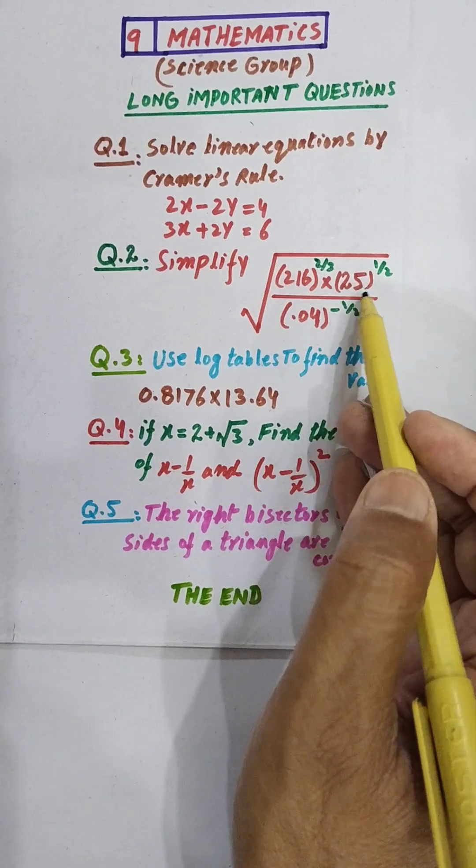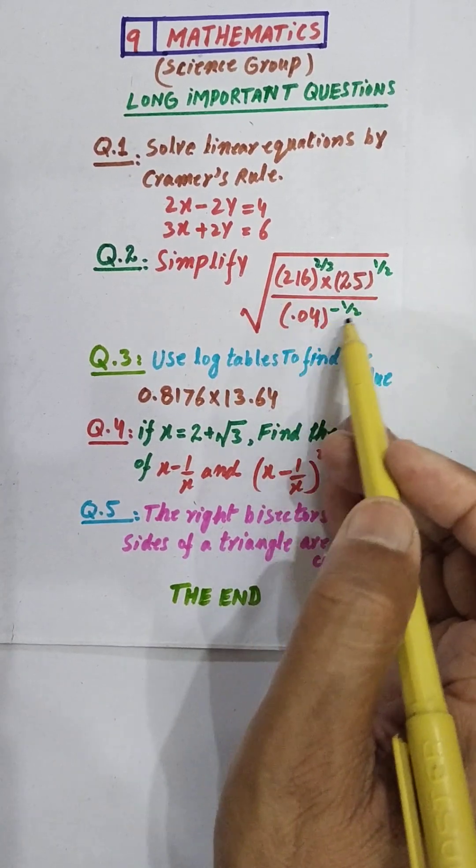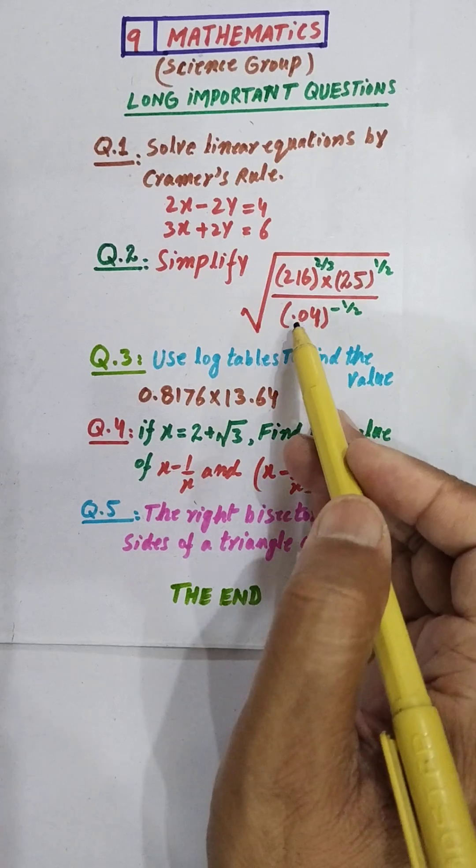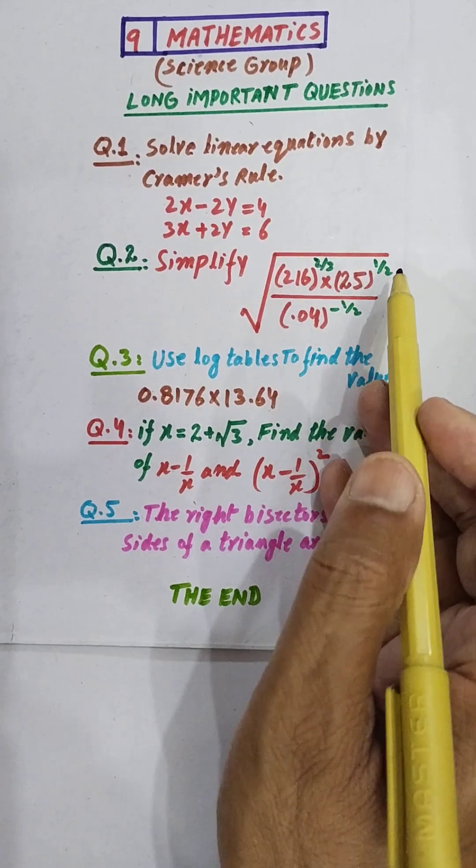0.44 power minus 1 over 2, whole square root.